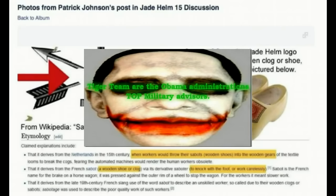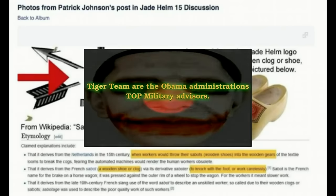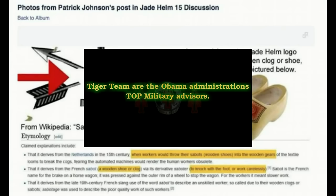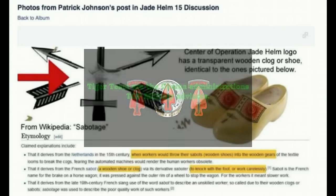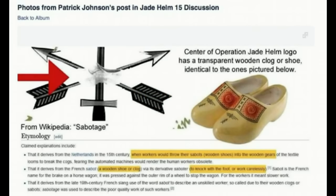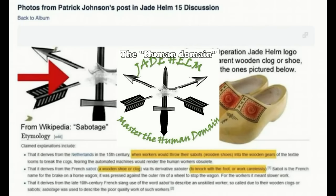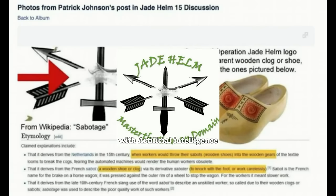Why? Because the government now perceives the American people as its greatest threat, and it will use a computer-driven military to clamp us down. Patriots will be classified as terrorists, and the true terrorists — the U.S. puppet government — who receives its directives and agendas from the ruling elite, they'll be deemed patriots to be protected at all costs.